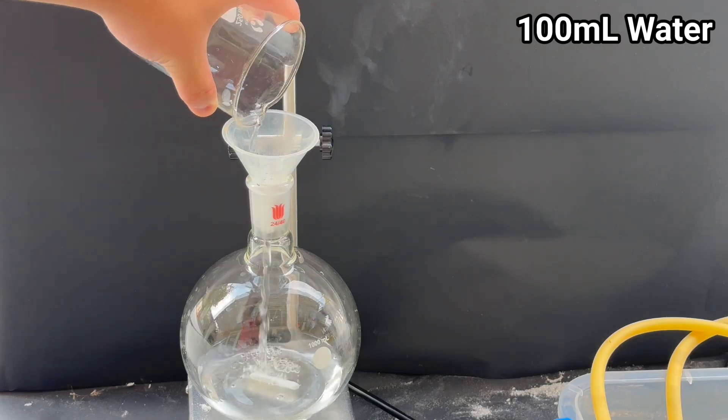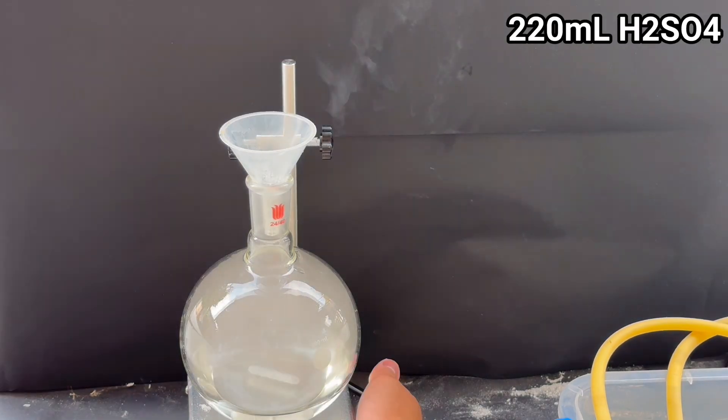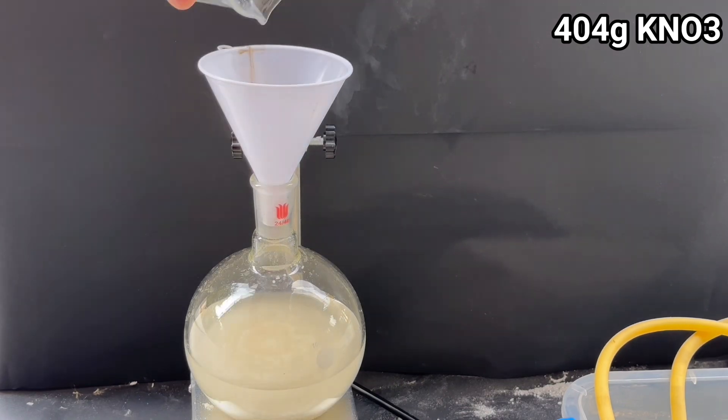I combine 100 ml of water, 200 ml of concentrated sulfuric acid, and 404 grams of potassium nitrate.